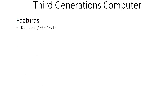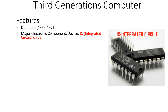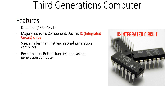The duration of the third generation was 1965 to 1971. Third generation computers used IC — integrated circuit — chips as their major electronic component. Their size was comparatively smaller than the first and second generation computers, and performance was better than both previous generations.